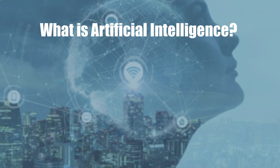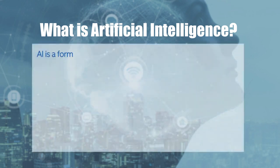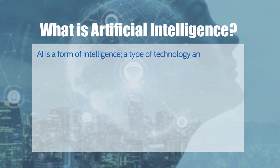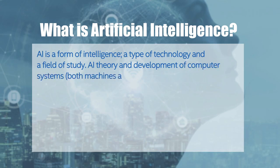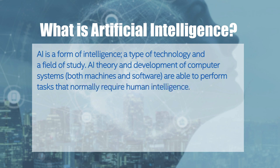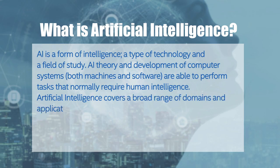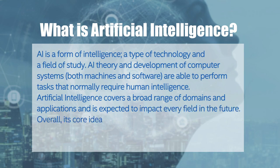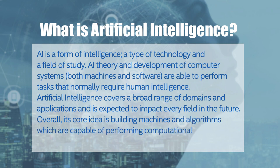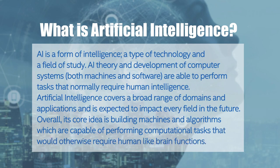So what exactly is Artificial Intelligence? AI is a form of intelligence, a type of technology and a field of study involving the theory and development of computer systems — both machines and software — able to perform tasks that normally require human intelligence. Artificial Intelligence covers a broad range of domains and applications and is expected to impact every field in the future. Its core idea is building machines and algorithms capable of performing computational tasks that would otherwise require human-like brain functions.